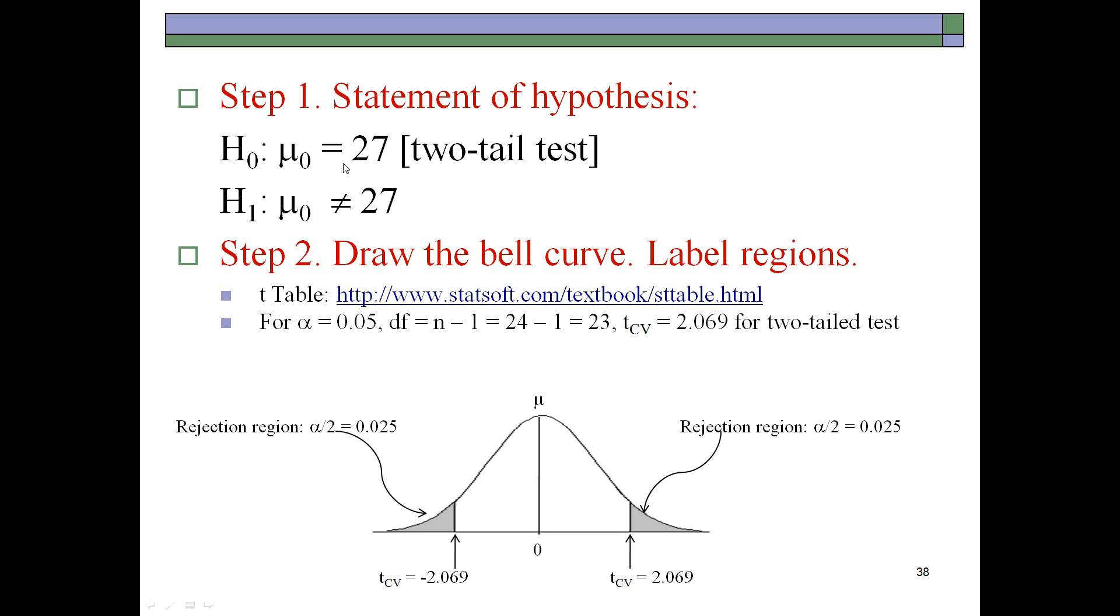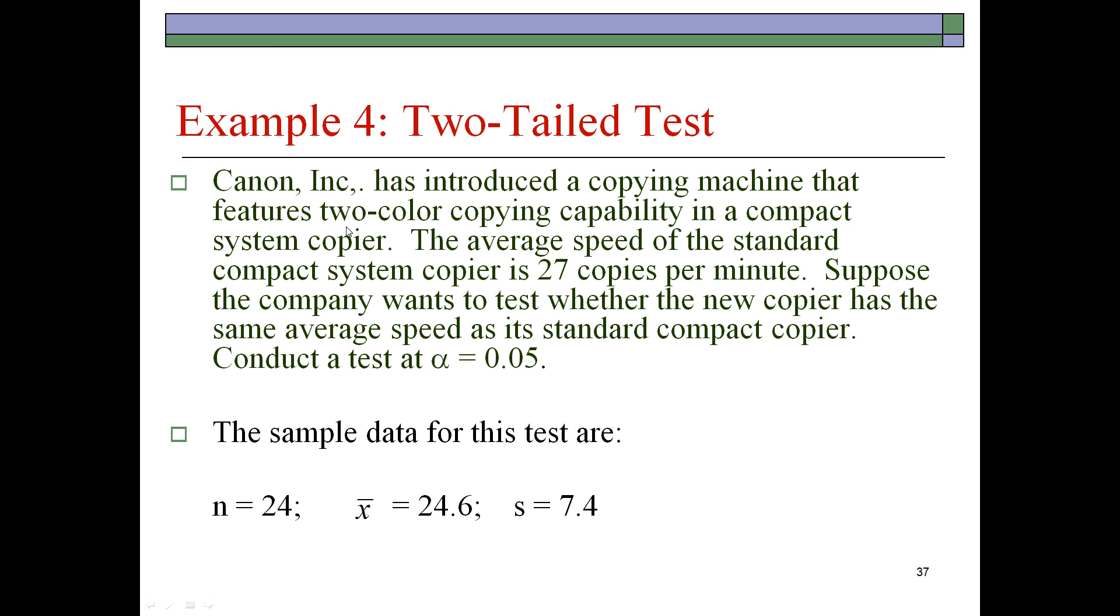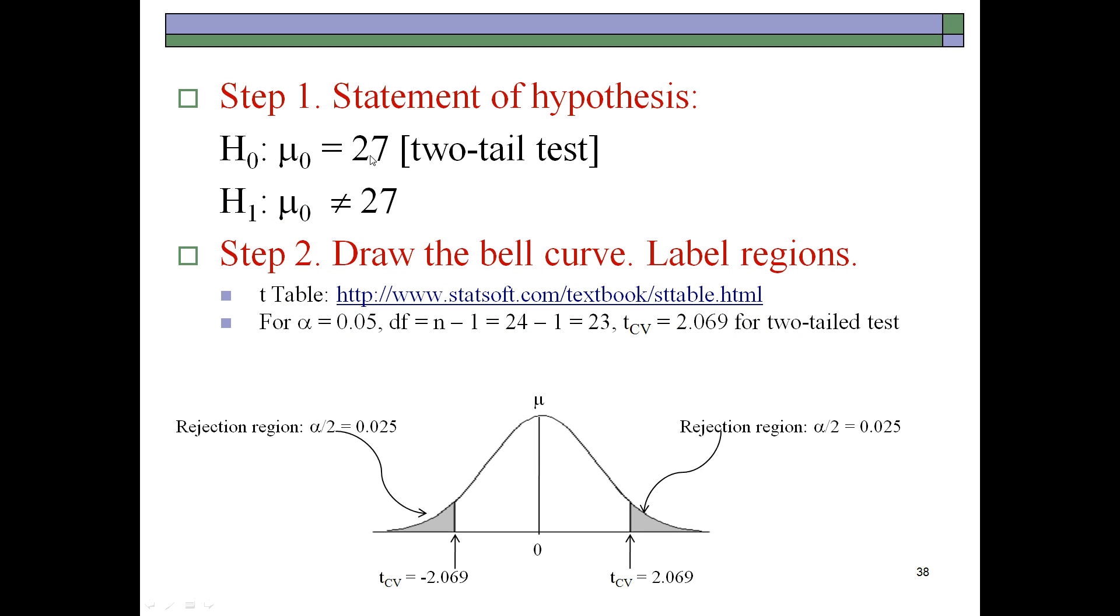The null hypothesis is that the number of copies per minute is 27. The alternative is that it is not. You would see that the company wishes to test whether the new copier has the same average speed. So same is equality. It is either 27 or it is not.